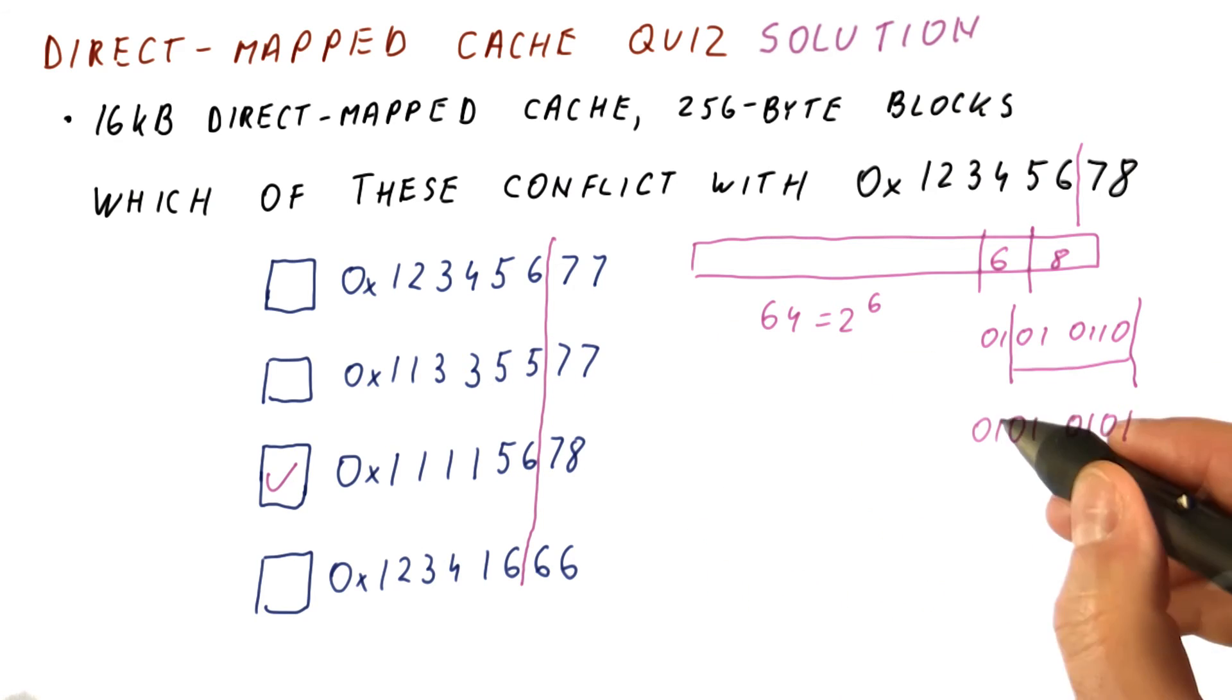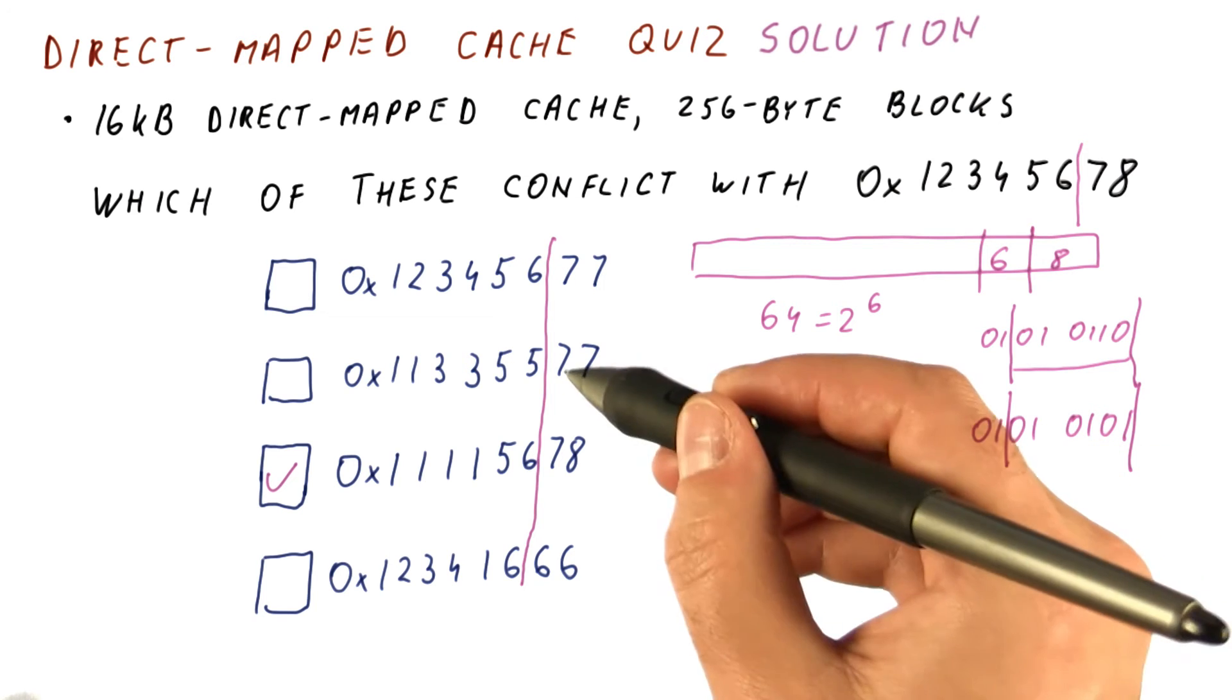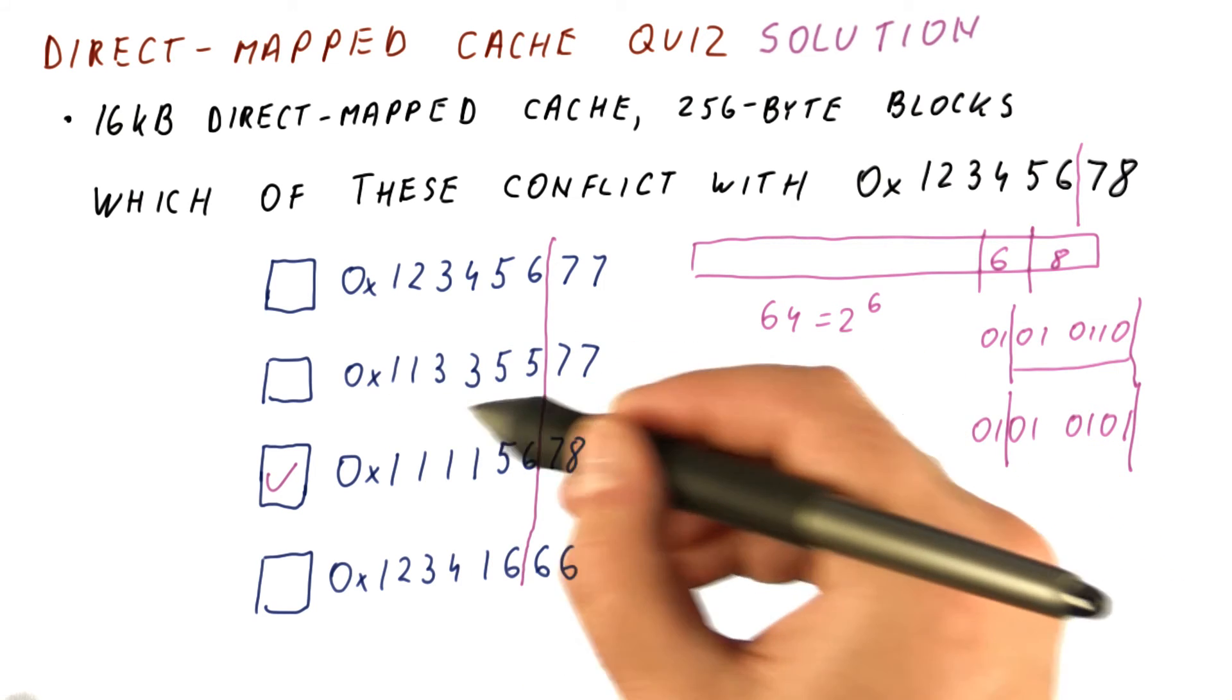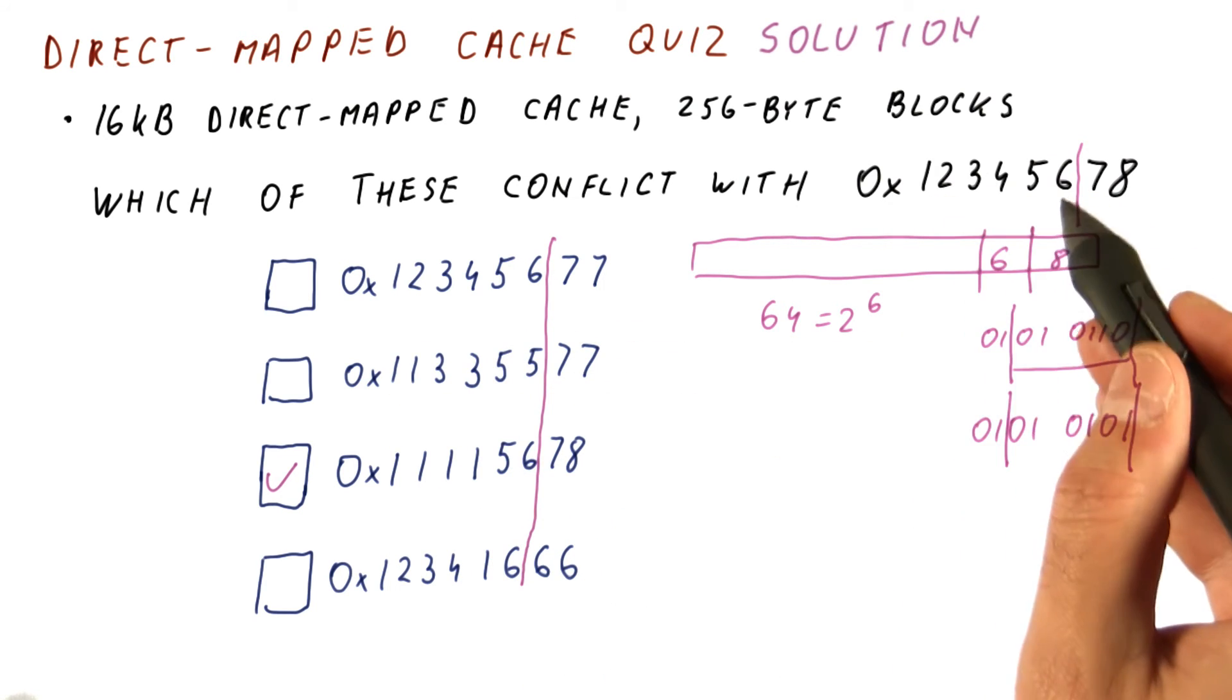Five, five looks like this. These are the six bits. They're not the same. So this block will not conflict with the one here.